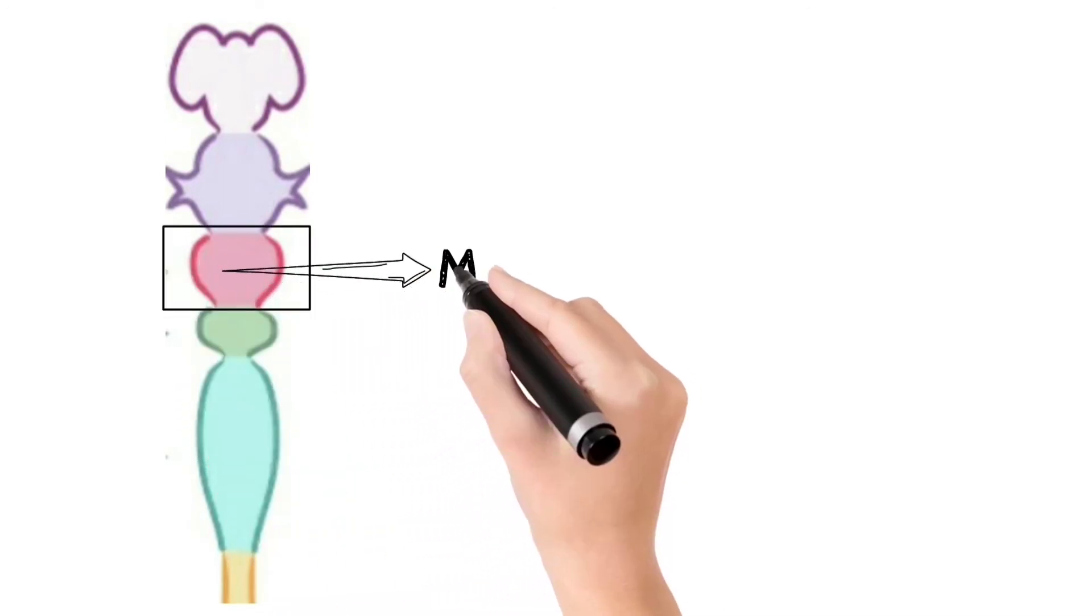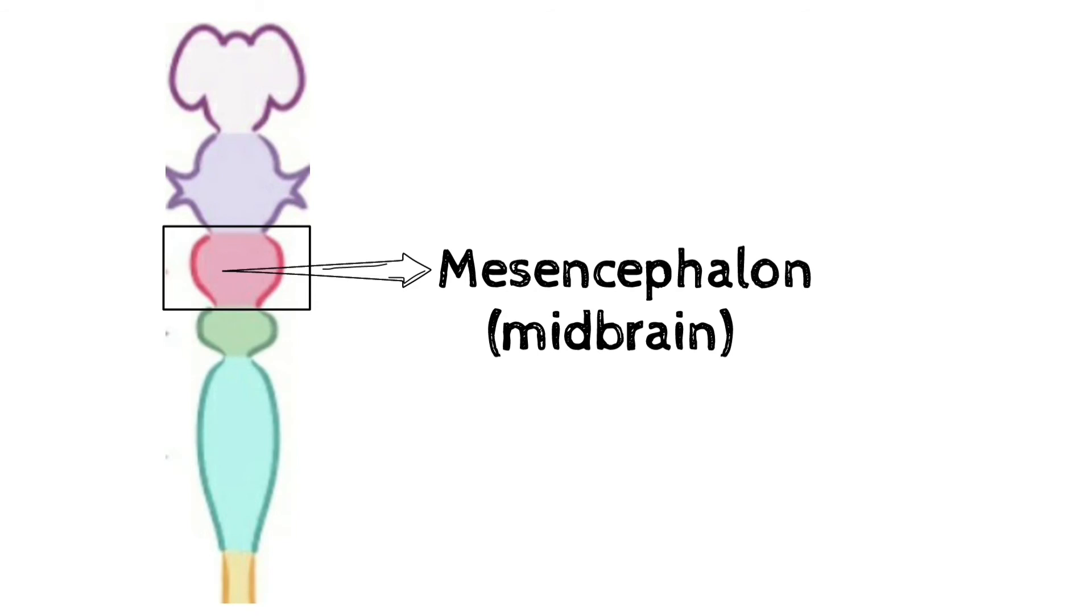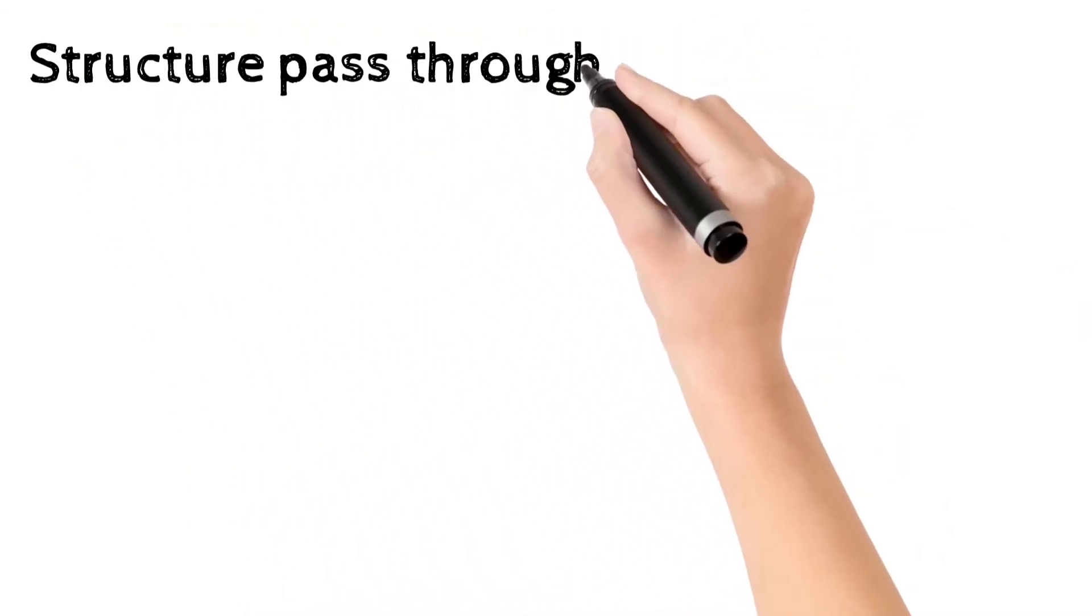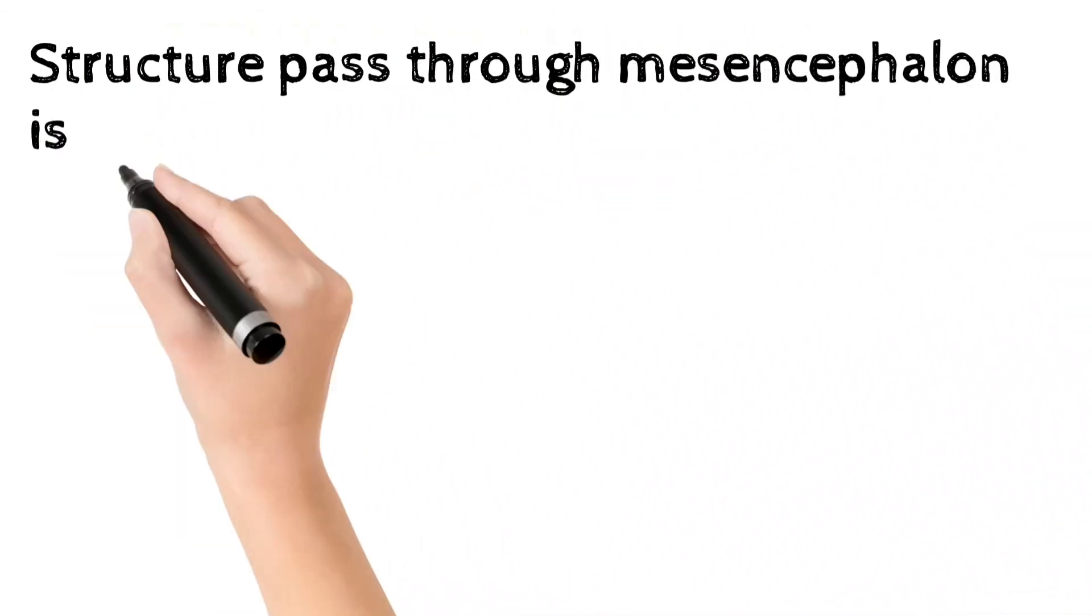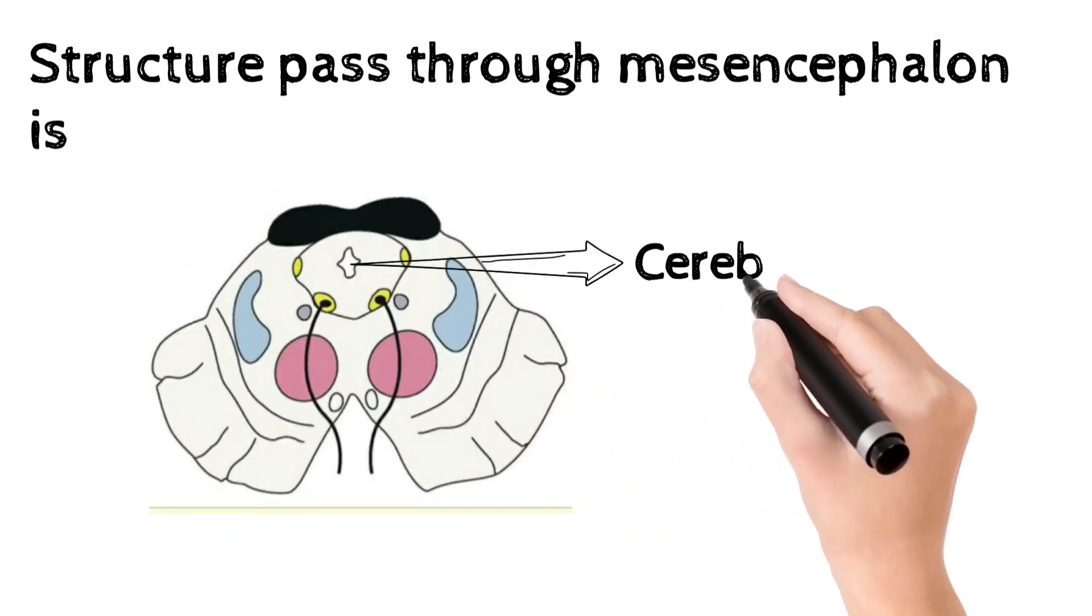If we see mesencephalon that is also called midbrain. Structure passing through mesencephalon is cerebral aqueduct.